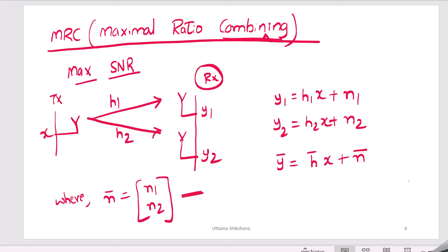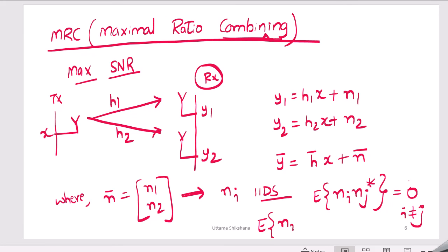Where n bar is equal to [n1 n2], this is the vector. Here we are assuming something, that is each of these n_i are IIDs which are independent and identically distributed random variables. Which means that some statistics you need to capture. If we take expectation of n_i n_j conjugate that will be equal to zero when i is not equal to j.